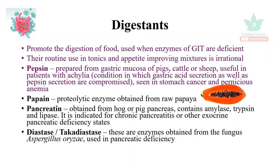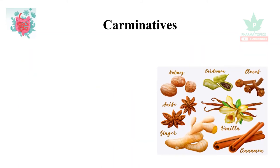Pancreatin, obtained from pig pancreas, contains amylase, trypsin, and lipase. It is indicated for chronic pancreatitis and other exocrine pancreatic deficiency states. Newer enzymes include diastase and taka-diastase, obtained from the fungus Aspergillus oryzae, useful in patients with pancreatic deficiency.